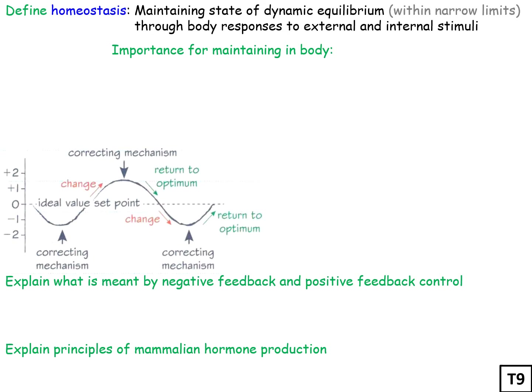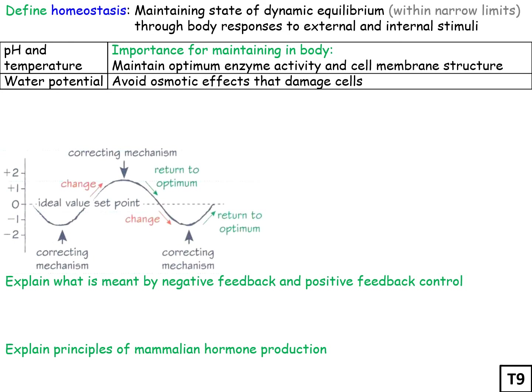Water is not the only thing important for maintaining the body - pH and temperature are also important. They affect enzymes, so maintaining an optimum enzyme pH and temperature is important so that enzymes are at their highest activity. pH and temperature also affect cell membrane structure as they include proteins. Water potential is important to maintain in the body to avoid osmotic effects that damage cells.